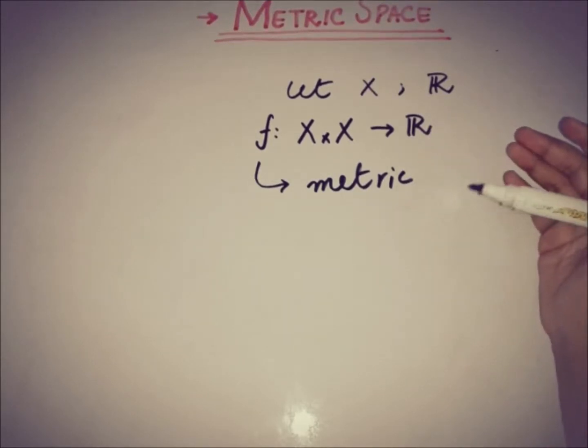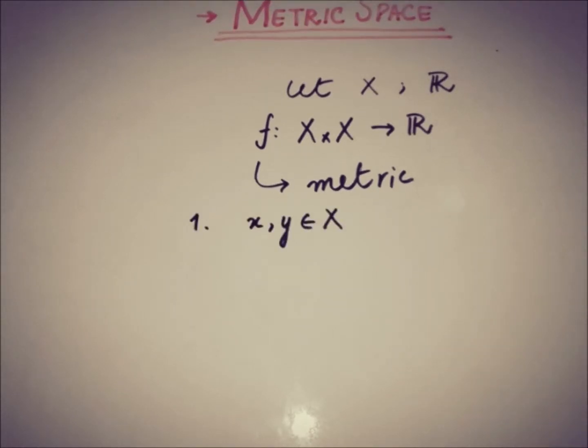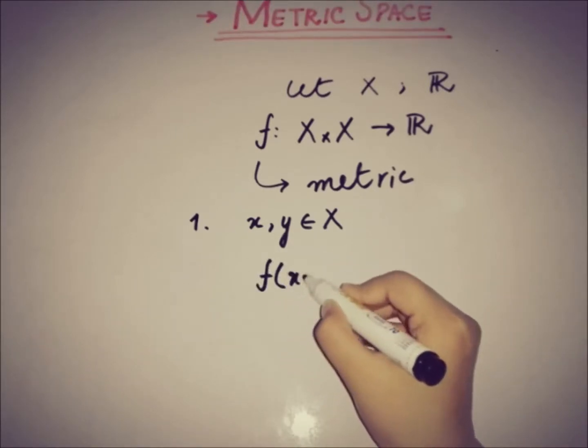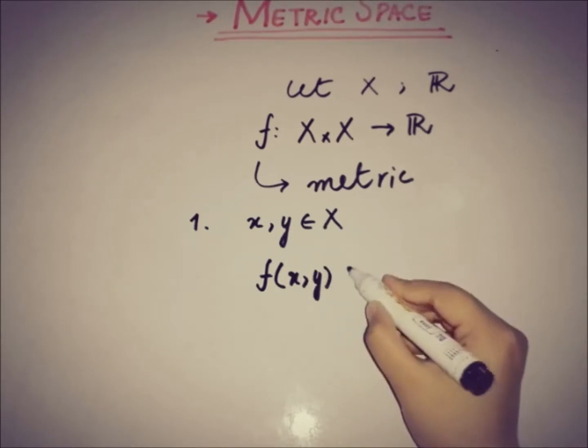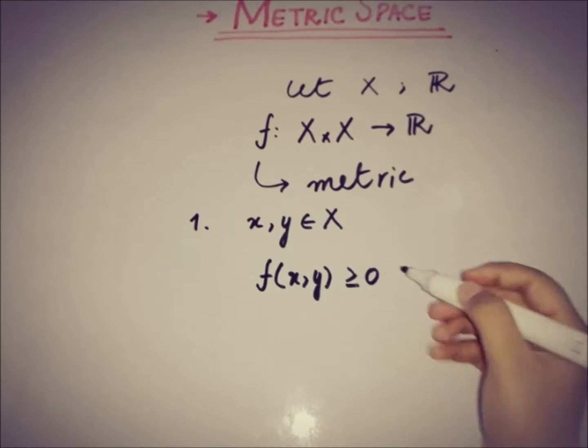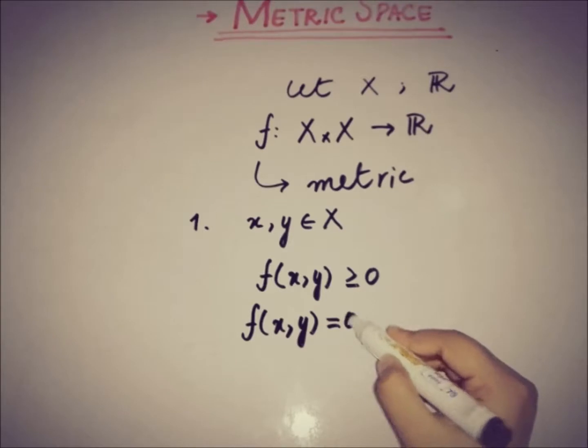The very first property is that for any pair x, y belongs to that X, the function f(x,y) must be greater than or equal to 0, and if the function is equal to 0 then this thing implies that x is equal to y.